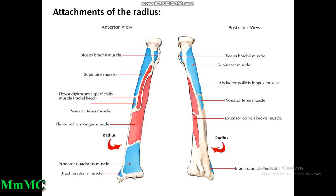Attachments of the radius: the radial tuberosity at the upper end has a rough posterior part giving insertion to the biceps brachii, and a smooth anterior part covered by a bursa. On the lateral surface, the upper part gives insertion to the supinator; the medial part gives insertion to pronator teres; and the lower part gives insertion to brachioradialis. The anterior border gives origin to flexor digitorum superficialis; from the anterior surface there is origin of flexor pollicis longus. From the posterior surface, extensor pollicis brevis originates, and above it abductor pollicis longus originates.